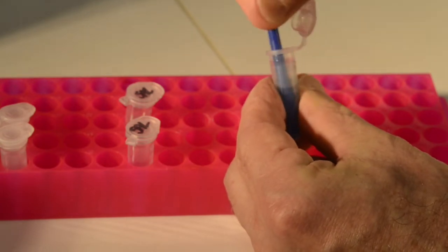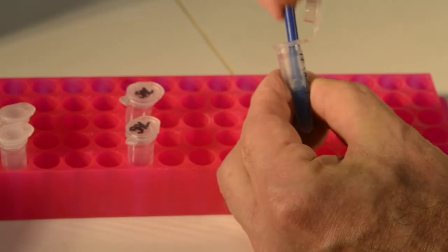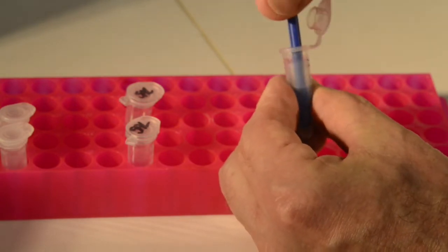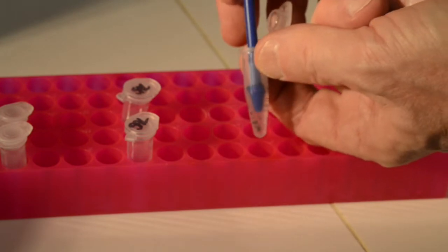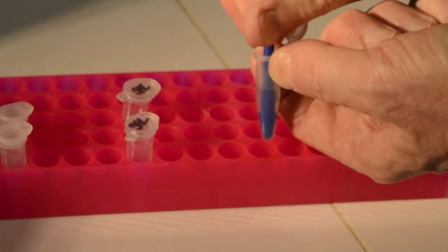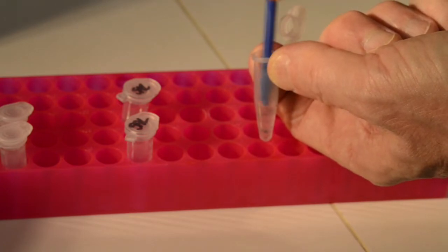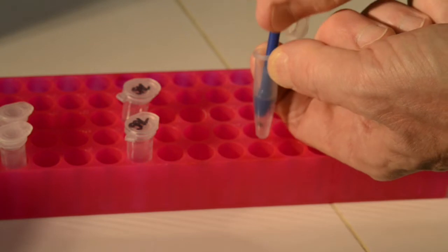You want to do a reasonably good job grinding it up. What you'll see is the liquid, the saline, will become cloudy. That's normal, and there will be large particles of the bean beetle exoskeleton. That's fine.